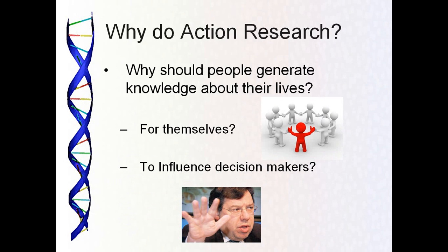First of all, people are doing it for themselves because they want to create knowledge about their lived experience, about their world, and they want to communicate that knowledge to other people. It's also beneficial for people to come together to make sense of their experience, to formalize, document, and communicate it. Secondly, to influence decision makers — we would all like this research to influence decision makers. So how can we make it influential, credible, and taken seriously? The way to do this is through the research methods that are used, and so the Arco-Mosaic model was very much invested in creating methods which could influence decision makers.